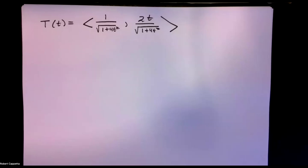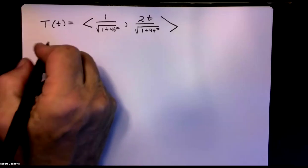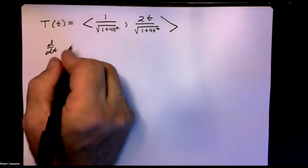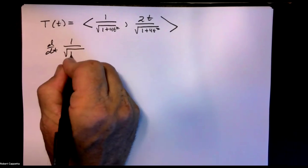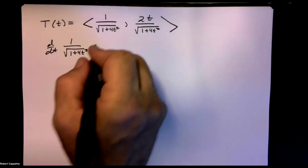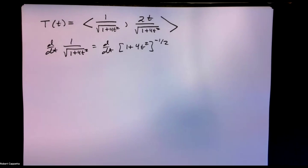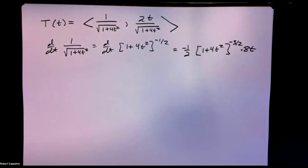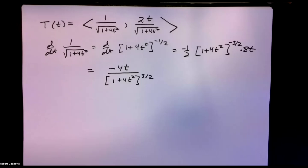Here's our T(t). To find T'(t), we need the derivative with respect to t of the first piece: the derivative of 1 over the square root of 1 plus 4t squared, which is (1 + 4t²)^(−1/2). Using the chain rule, we get −1/2 times (1 + 4t²)^(−3/2) times 8t, which simplifies to −4t over (1 + 4t²)^(3/2).